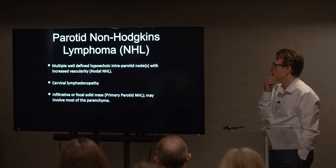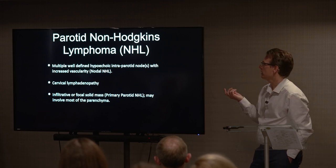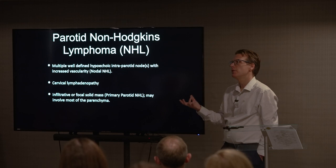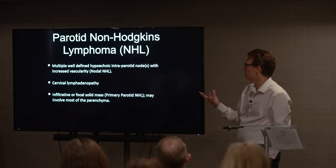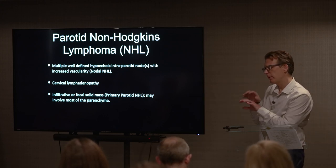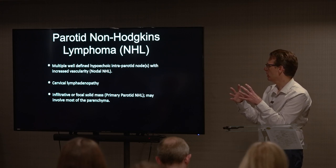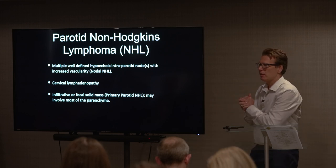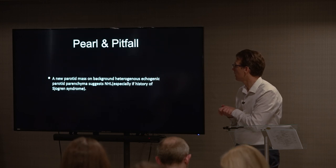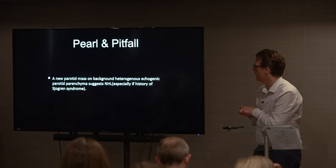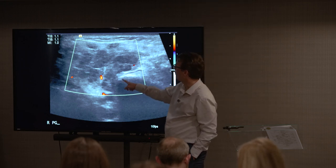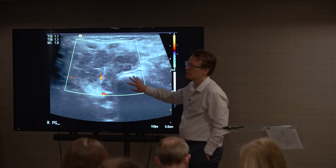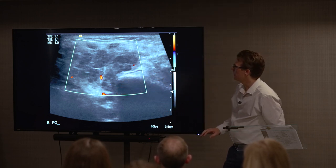Non-Hodgkin's lymphoma can present in the parotid gland because there are lymph nodes within the gland. Look for associated features like cervical lymphadenopathy. It can appear as an infiltrative mass or as a focal hypoechoic mass presenting as a unilateral lump. A history of Sjögren's would be a clue. This is a confirmed case of non-Hodgkin's lymphoma in the parotid — the margins are ill-defined, it's hypoechoic, looking aggressive and sinister, as opposed to a well-defined benign lesion.